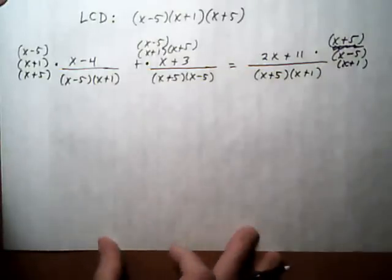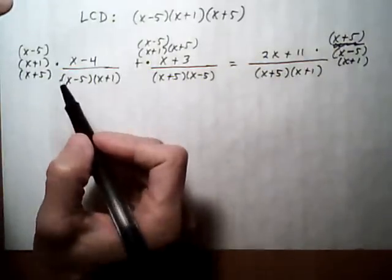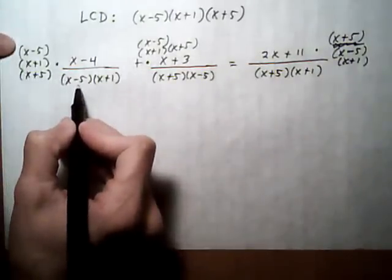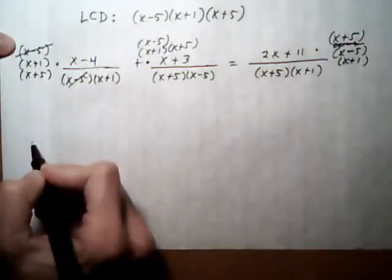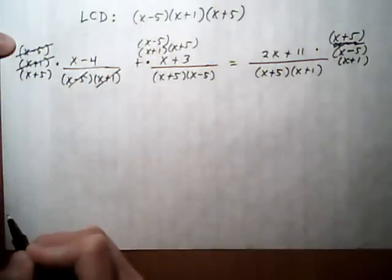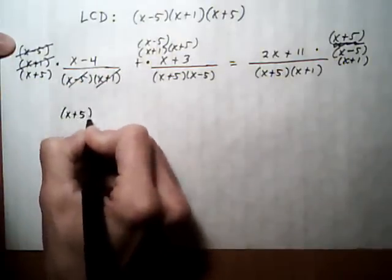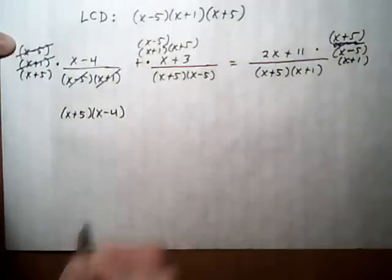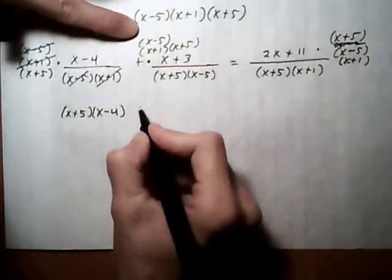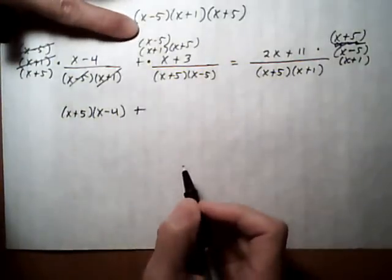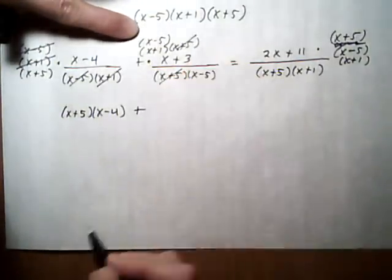All right, so now we want to cancel. So we're going to have some pieces that cancel out here. The x minus 5 cancel out. The x plus 1s cancel out. And we're left with x plus 5, x minus 4. On the next one we've got plus. x plus 5 cancels out. x plus,